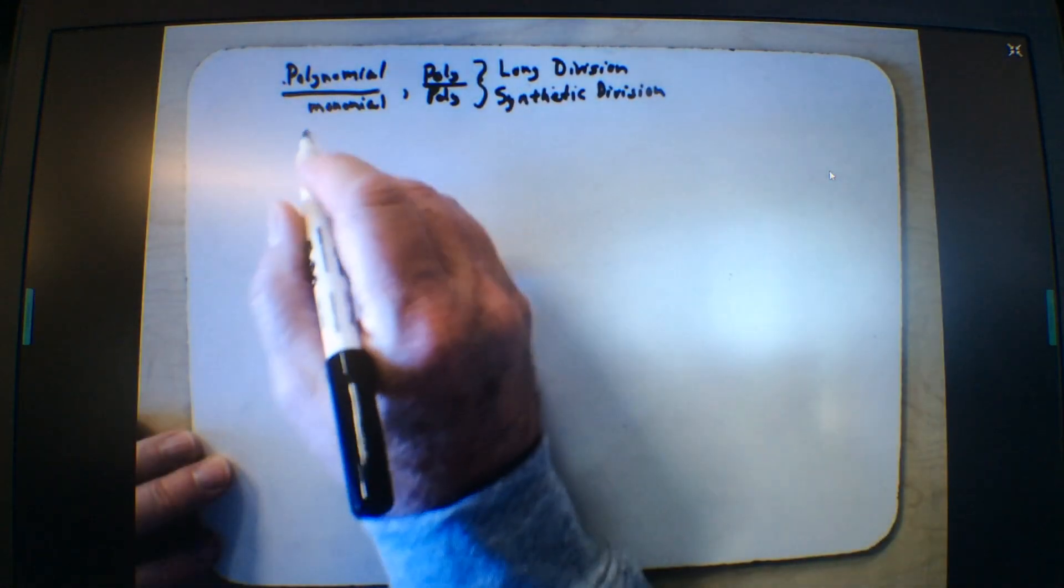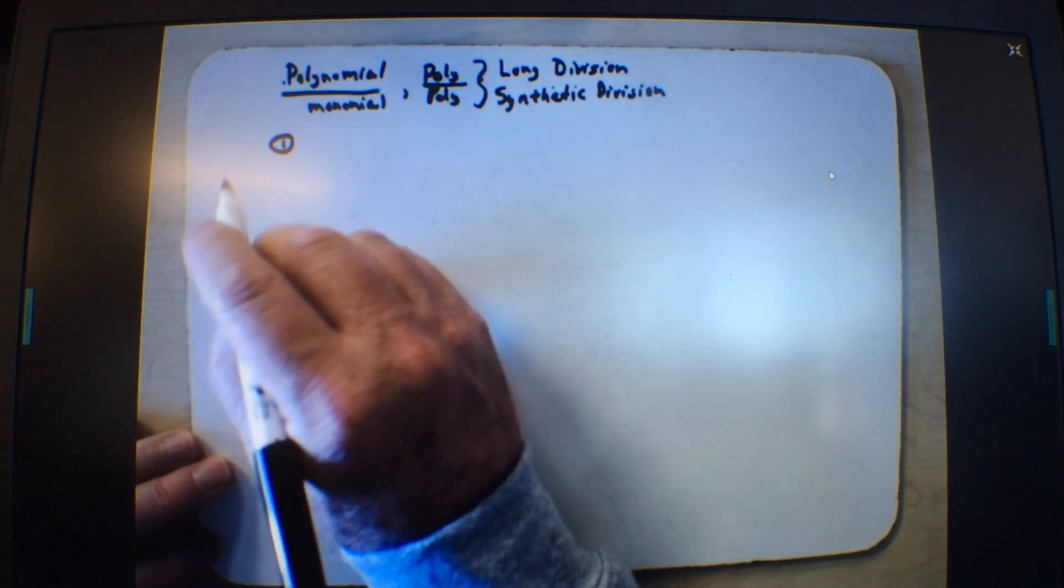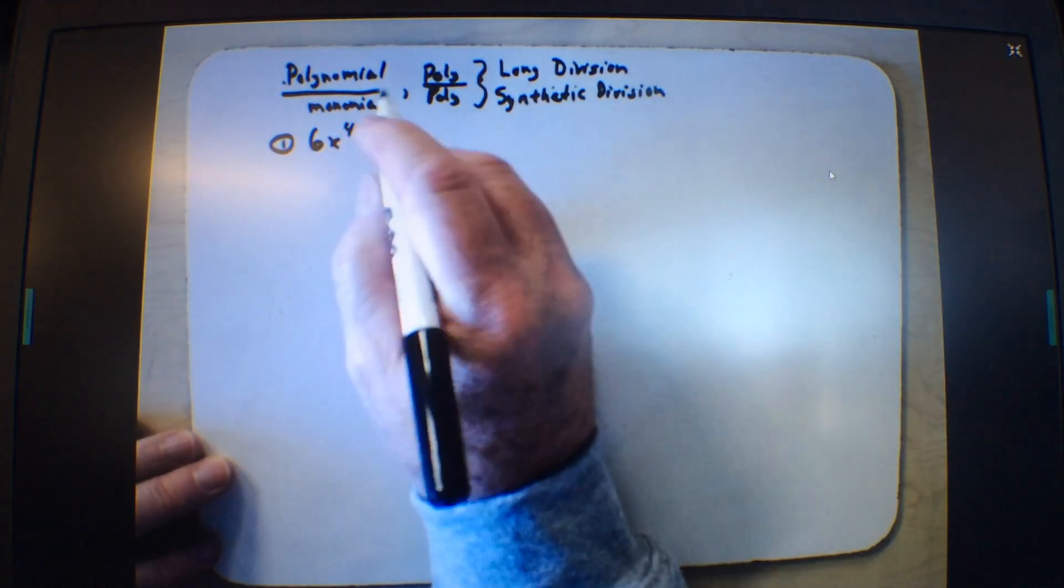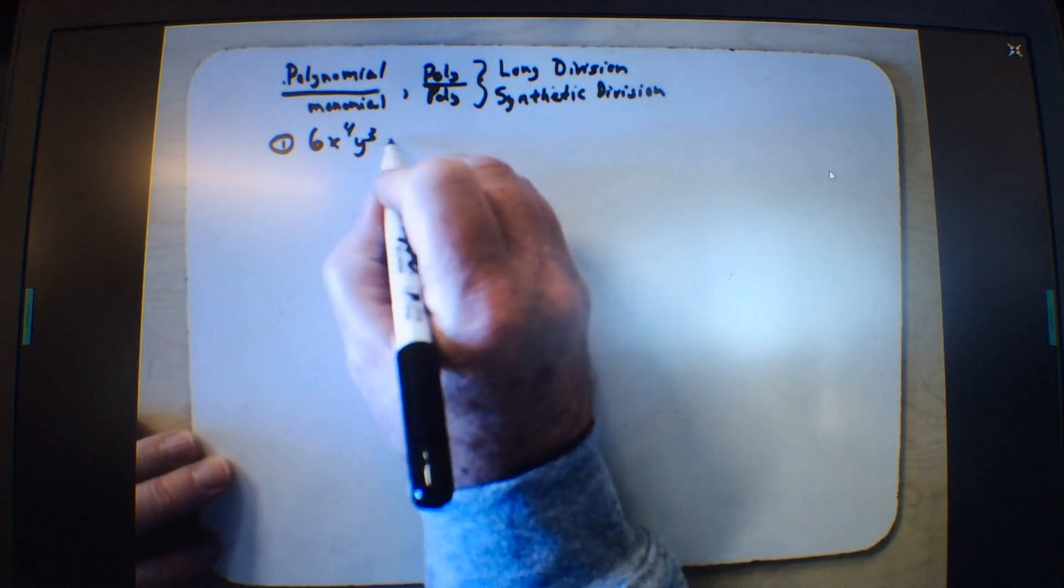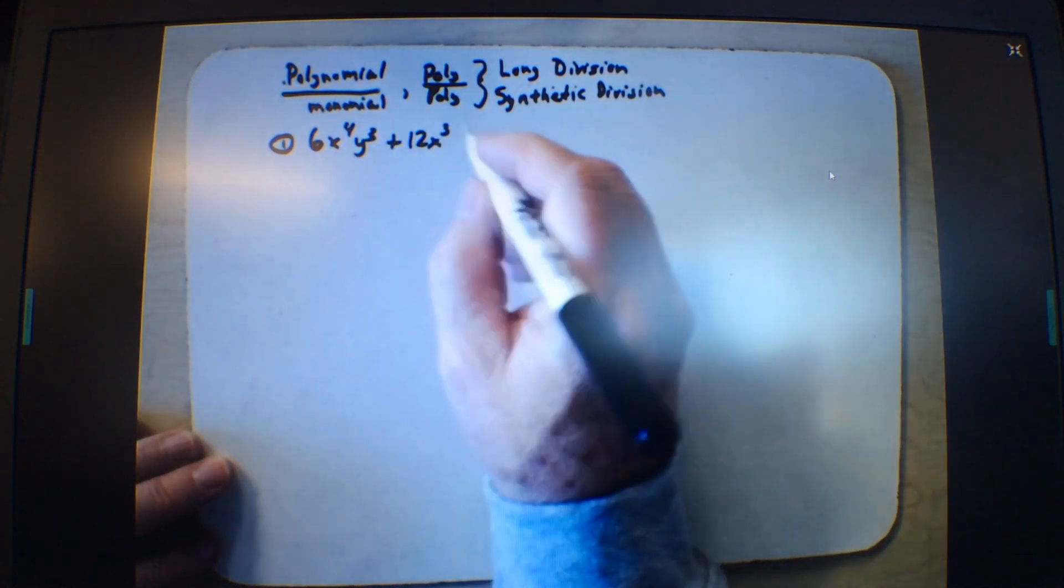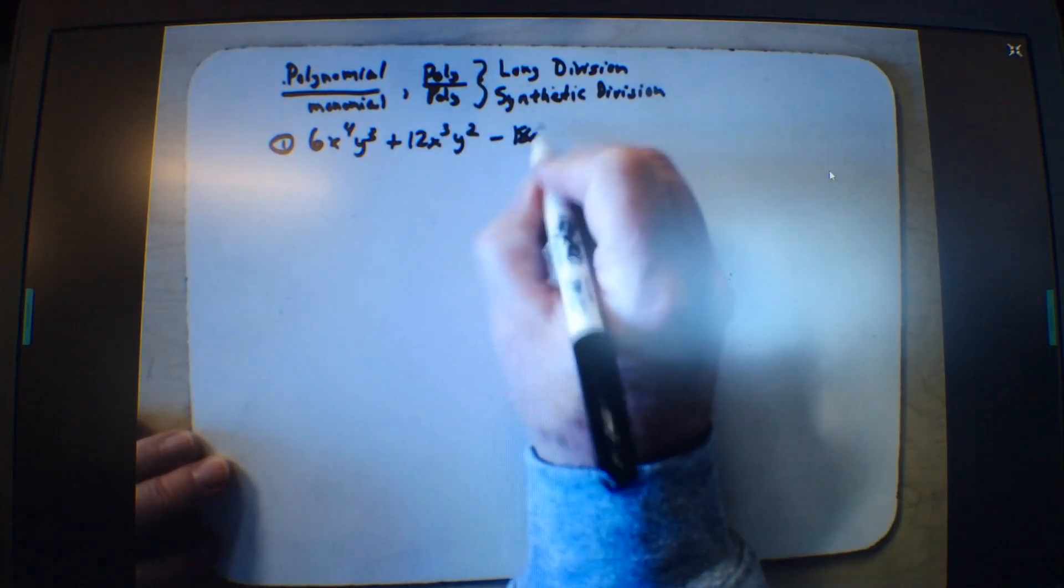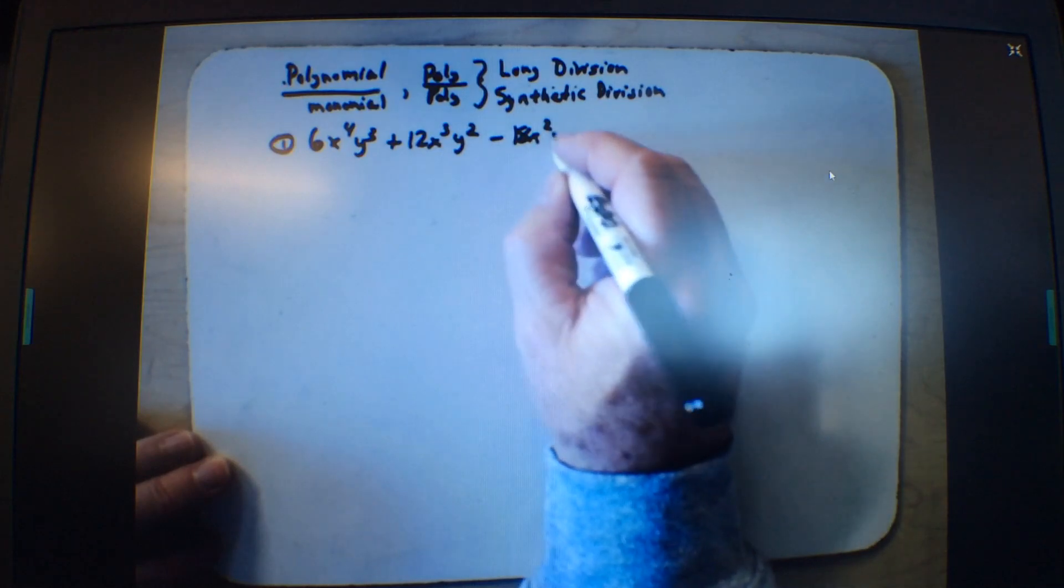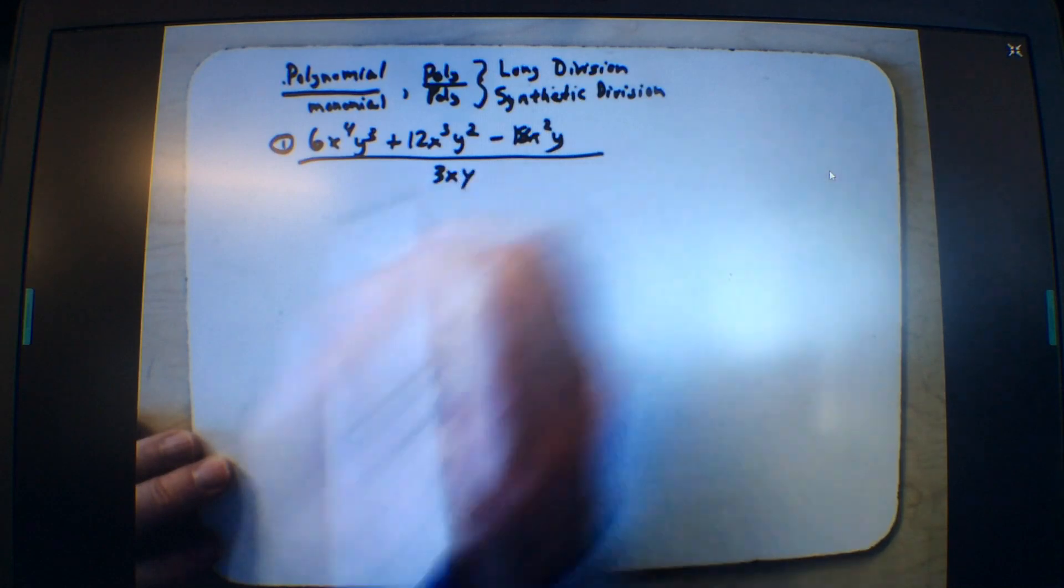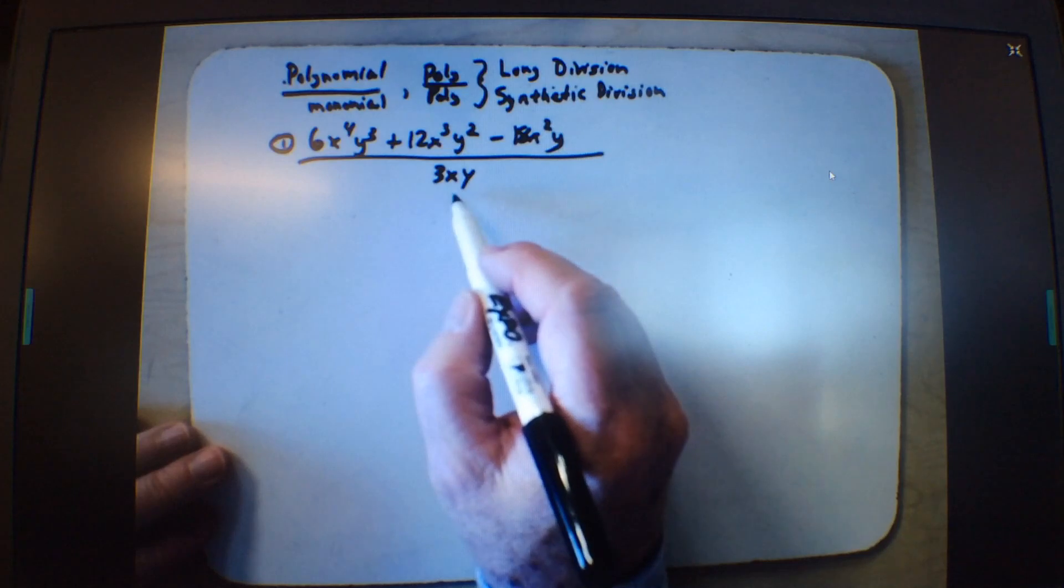Okay, so we'll start with the polynomial divided by a monomial. And I'm just going to show you using an example how this works. Let's say that we have a polynomial of 6x to the 4th, y to the 3rd, plus 12x to the 3rd, y squared, subtract 18x squared, y, all over 3xy. So we have a polynomial divided by a monomial.